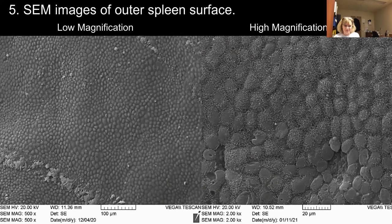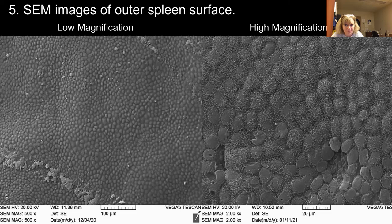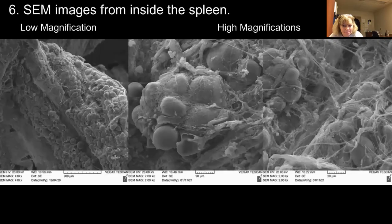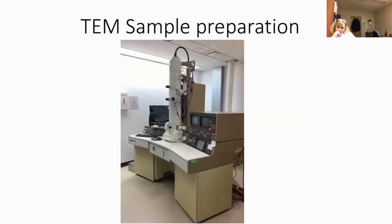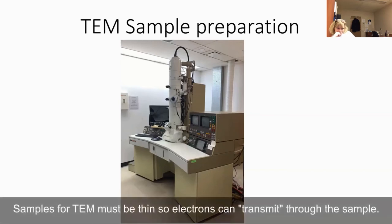Here are some SEM images: first, the outer surface of the spleen capsule at 500x magnification, then the same surface at 2,000x. Interestingly, the surface wasn't smooth. Other images show the inside of the spleen at 400x and 2,000x magnification, showing cells and connective tissue. If I instead want to study the internal structure of individual spleen cells with a transmission electron microscope, I need to do additional preparation to make very thin sections of the tissue.